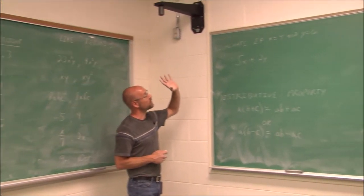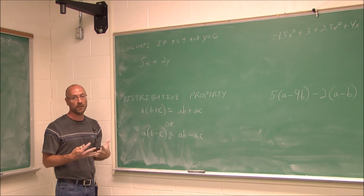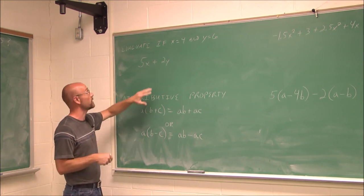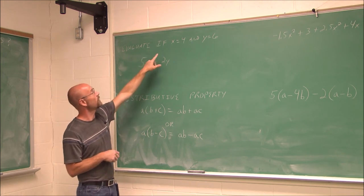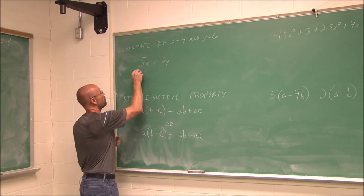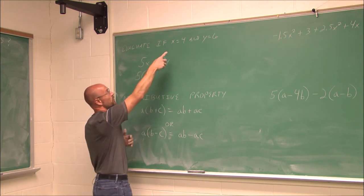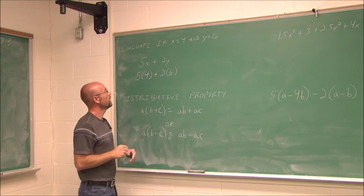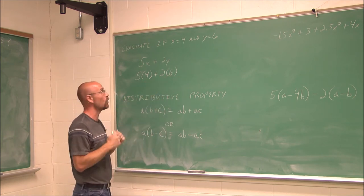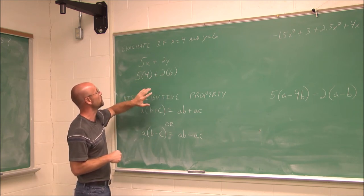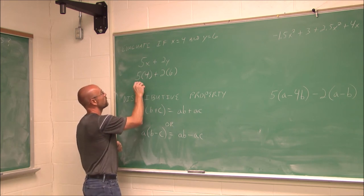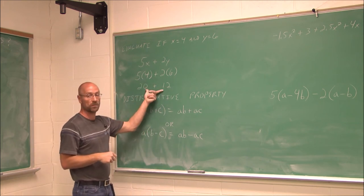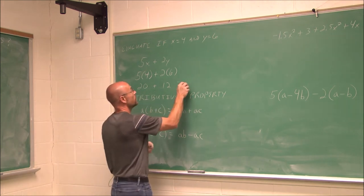Let's move on to actually evaluating an expression. When we evaluate expressions, we're given the values and we follow order of operations. Evaluate if x equals 4 and y equals 6 — this is what I call plug and chug. For x, I put in the given value using parentheses; for y, I put in the given value using parentheses. I follow order of operations: I have multiplication and addition, so I do multiplication first. 5 times 4 is 20, 2 times 6 is 12. Then I add: 20 and 12 is 32.